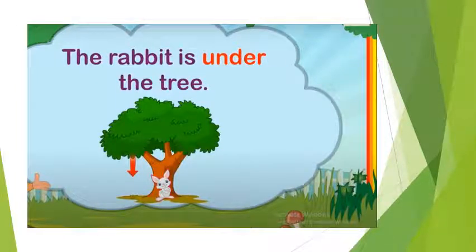The rabbit is under the tree. Look at the rabbit. So innocent rabbit. It is sitting under the tree. And the arrow is pointing the position.